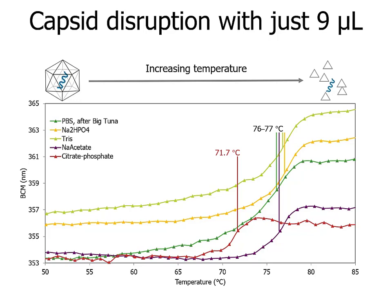Comparing all five different buffers post-exchange to each other, we can see that for the most part, the four buffers — PBS, phosphate, tris, and sodium acetate — all had very similar thermal stabilities based on their capsid disruption temperatures. Really the only one with any significant difference was that citrate phosphate sample, our positive control.